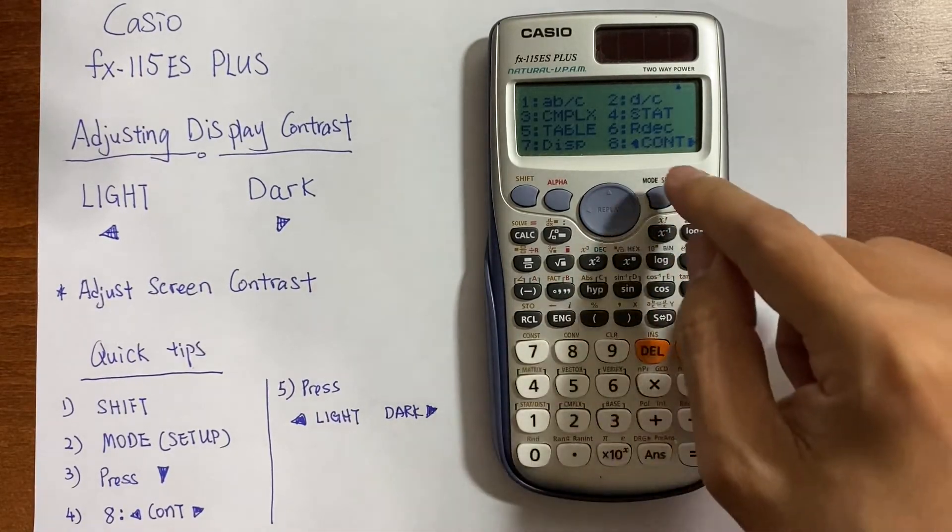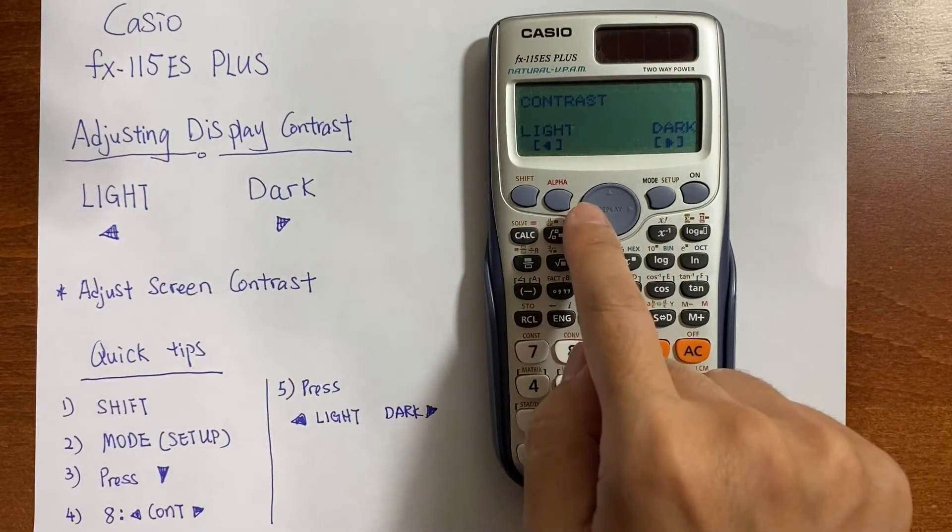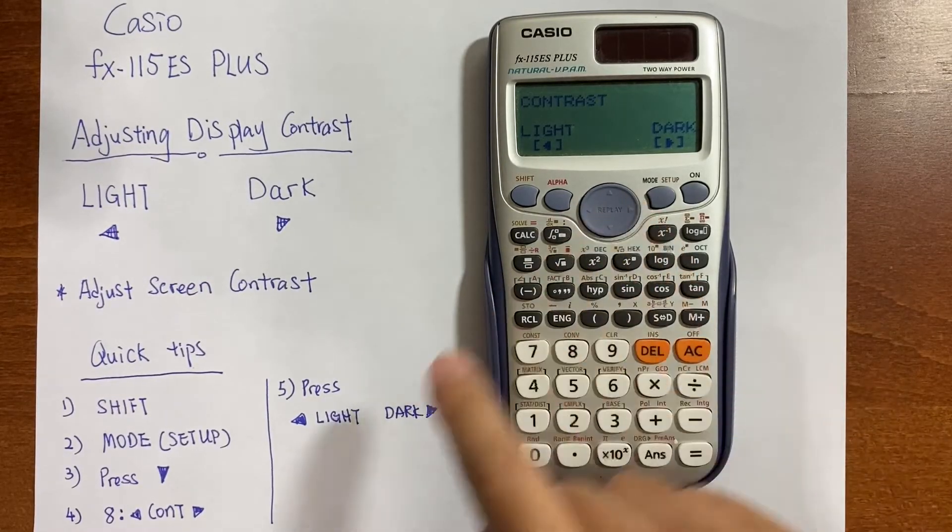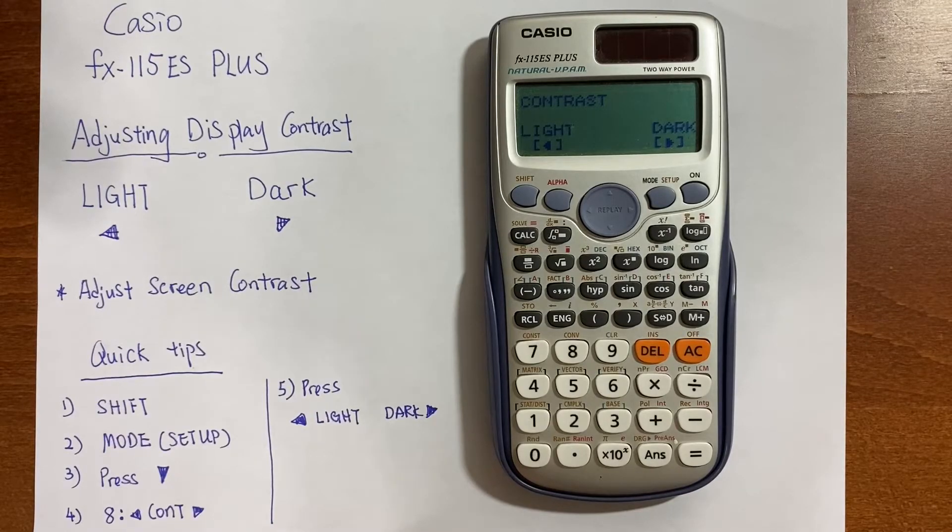And number 8, select number 8. And then just press the left or right button until you find the contrast display that fits you the most.